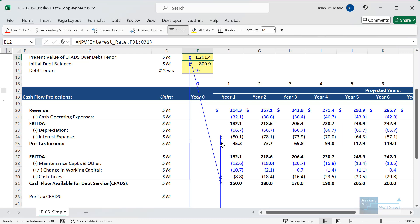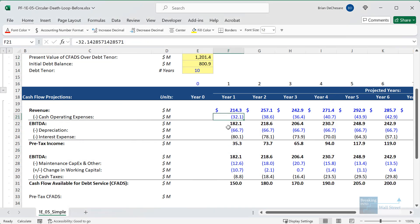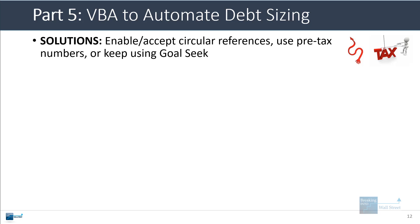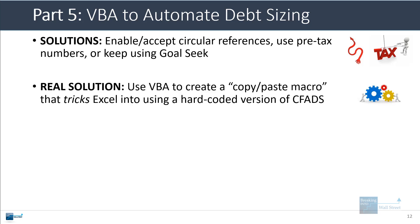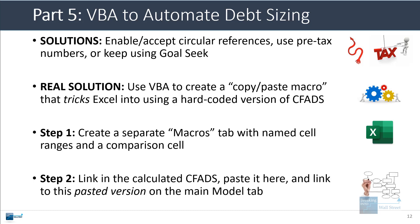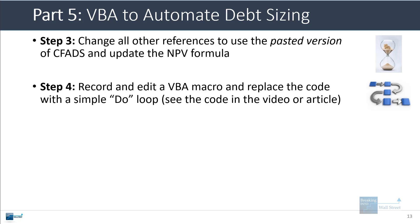Some people would leave this in and enable circular references, but many groups and firms would not accept models with circular references. You could also use pre-tax versions or use Goal Seek instead of setting up the NPV formula. The real way to fix this in most cases is to use VBA to create a copy-paste macro that tricks Excel into using a hard-coded version of the CFADS rather than the calculated version. To do this, we'll create a separate macros tab with named cell ranges and a comparison cell, link in the calculated CFADS, do a copy and paste, then link to this pasted version on the main model tab, update all references, and record and edit a VBA macro with a simple do-until loop.